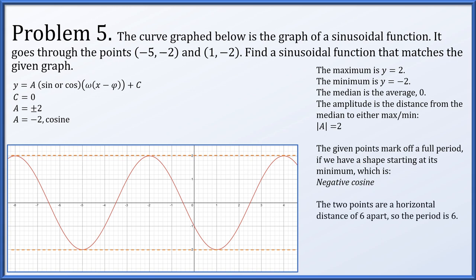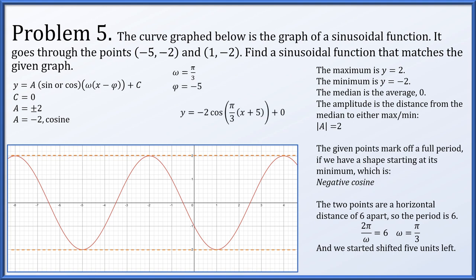The two points go from x equals negative 5 to x equals 1, a distance of 6, so the period is 6. Since 2 pi over omega equals 6, omega equals pi over 3. We shifted 5 units to the left to start our shape at x equals negative 5 rather than at x equals 0, so phi equals negative 5. Therefore y equals negative 2 times the cosine of pi over 3 times the quantity x plus 5, all plus 0.